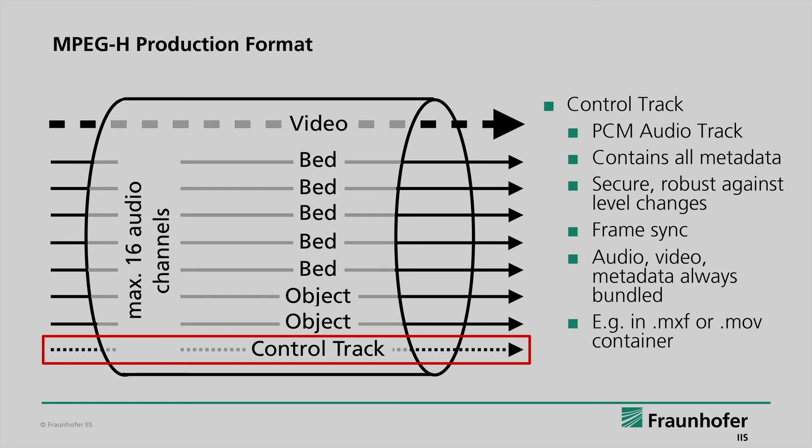In each corresponding video frame, all metadata are repeated. That means MPEG-H metadata is always bundled with our audio and video signals and never gets lost. And another great feature is that the MPEG-H metadata is fully compatible with any today's audio and video software or live broadcasting equipment, such as a mixing console or an SDI router — because it's just an audio track.